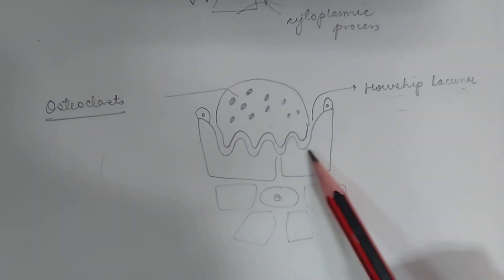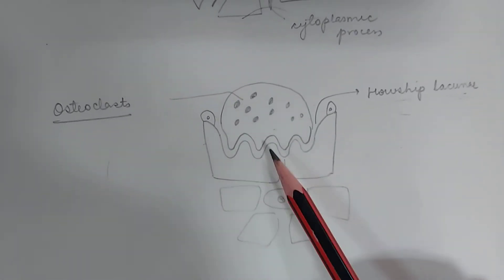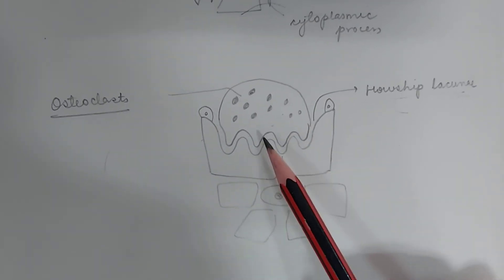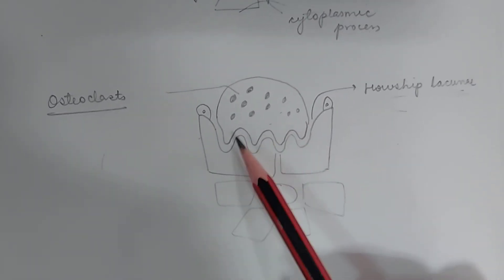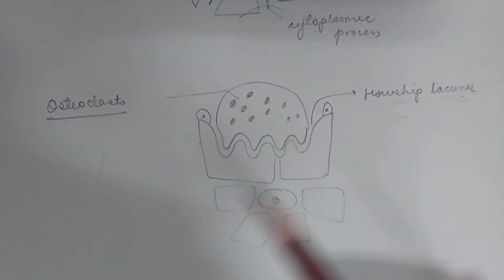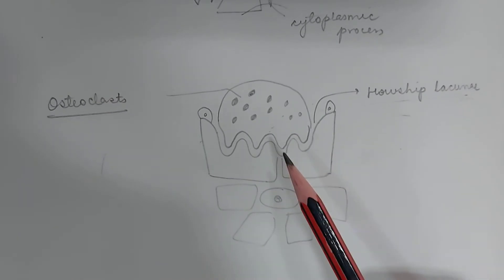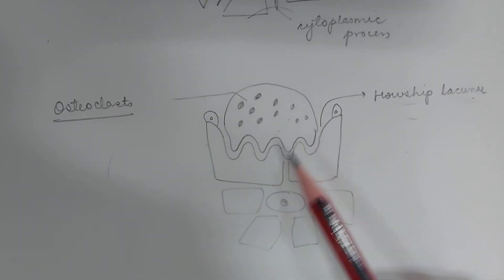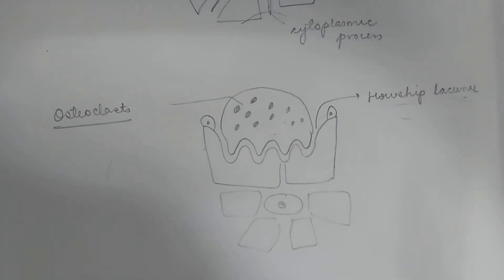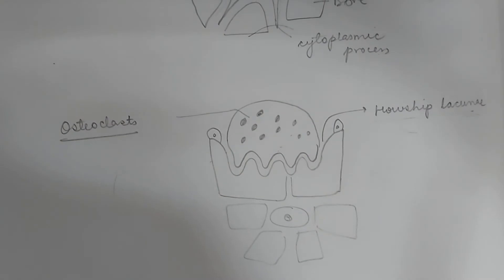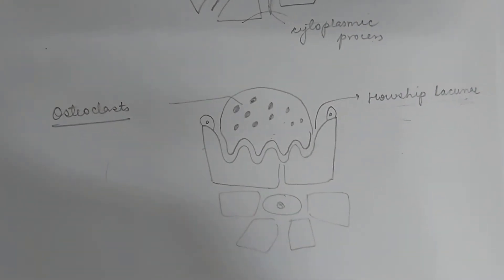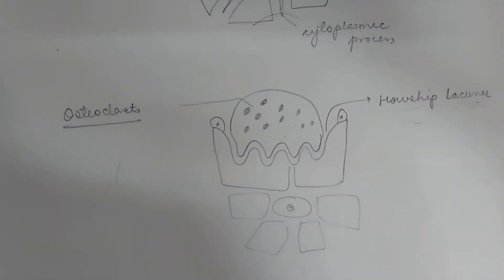The fourth type of cells are osteoclast cells, which are large and multinucleated. These do not arise from the osteoprogenitor cells but originate from the fusion of bone marrow-derived cells. The main function of osteoclast cells is bone resorption.